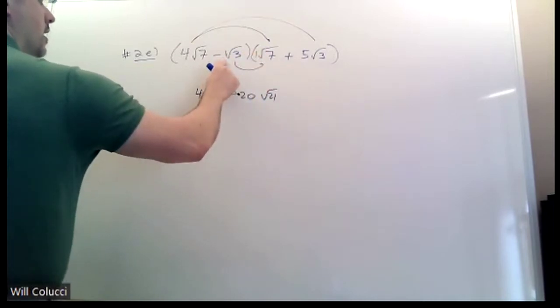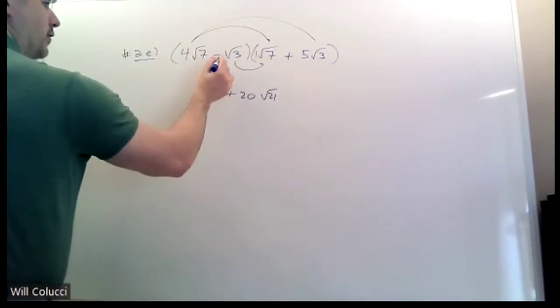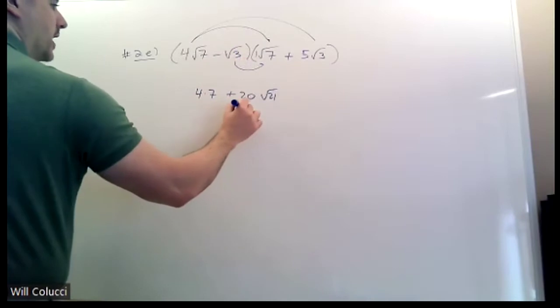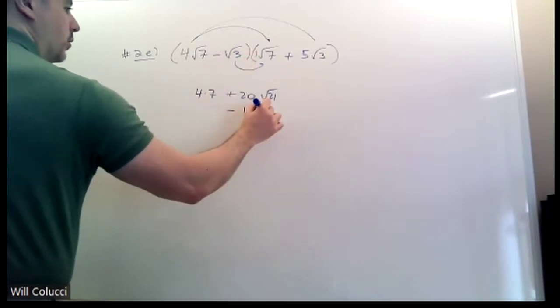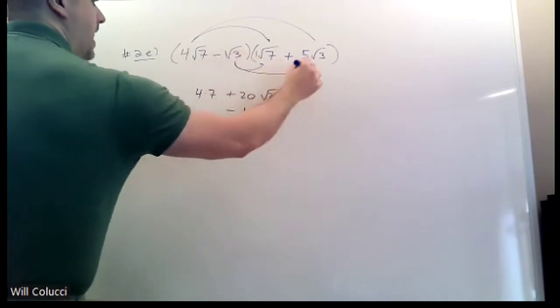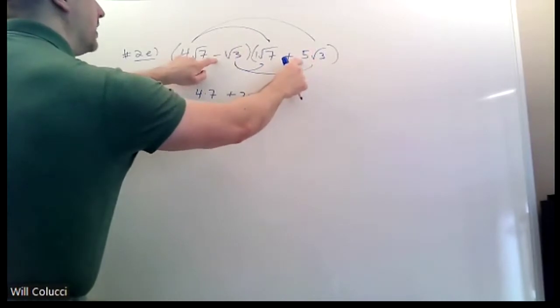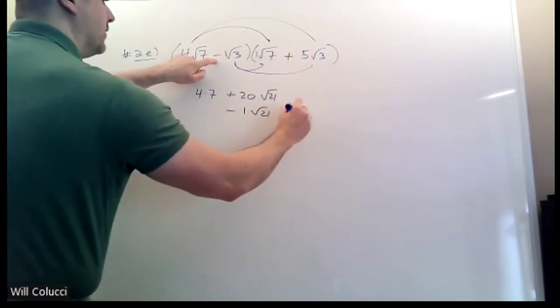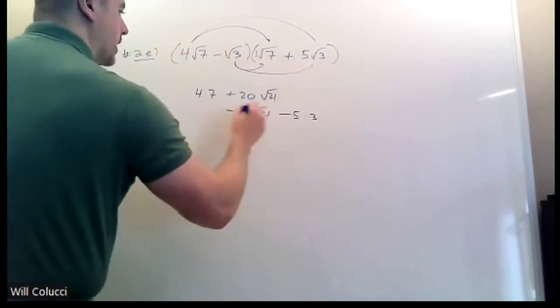Then do the inner. Radical 3 and radical 7 is a negative 1 there. Negative 1 times 1 is negative 1. And then you get radical 21. And then at the end, the last. You get negative 1 times 5, which is negative 5. Radical 3 and radical 3 make 3.